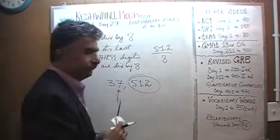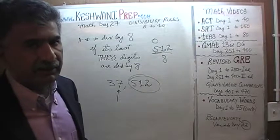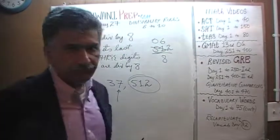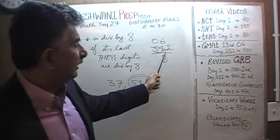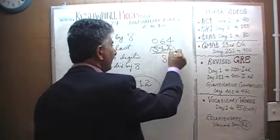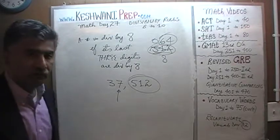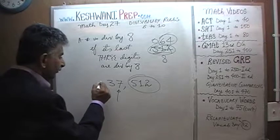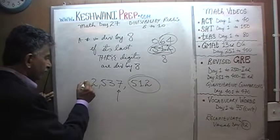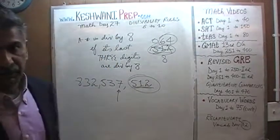So we just check 512 divided by 8. 5 has no 8s, so 5 joins 1 to become 51. 51 has six 8s — 6 times 8 is 48 — leaving a remainder of 3. The 3 joins the 2 to become 32, and 32 has four 8s exactly. Since 512 is evenly divisible by 8, therefore 37,512 is divisible by 8 — and so is 537,512 and any other number where the last three digits are 512. The last three digits are what matter.